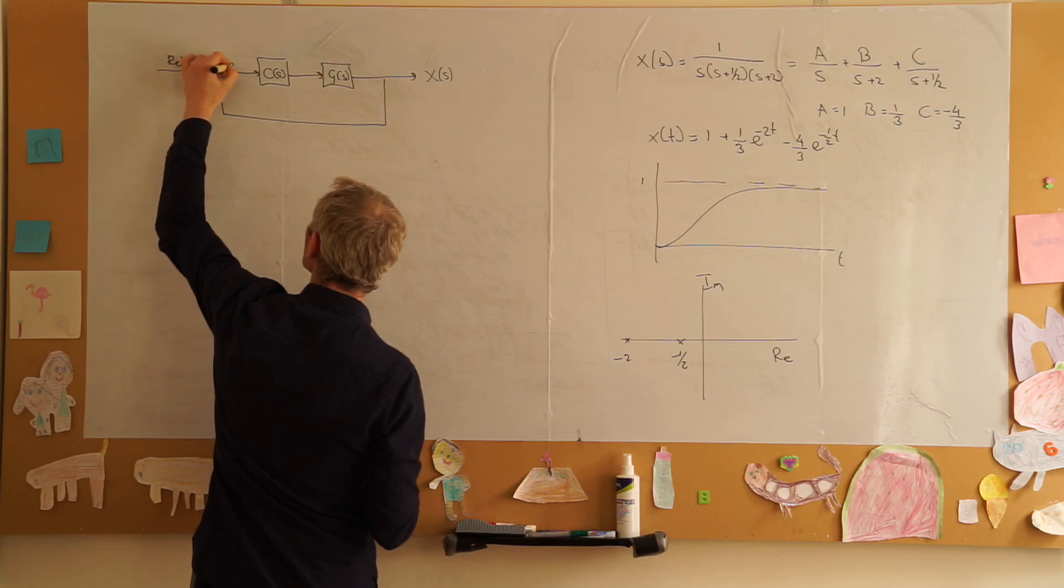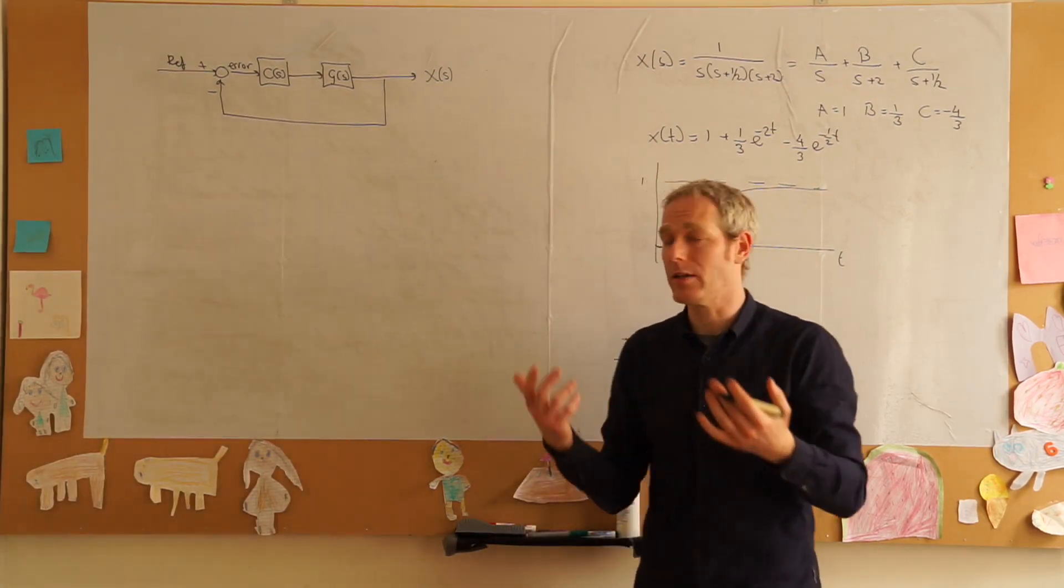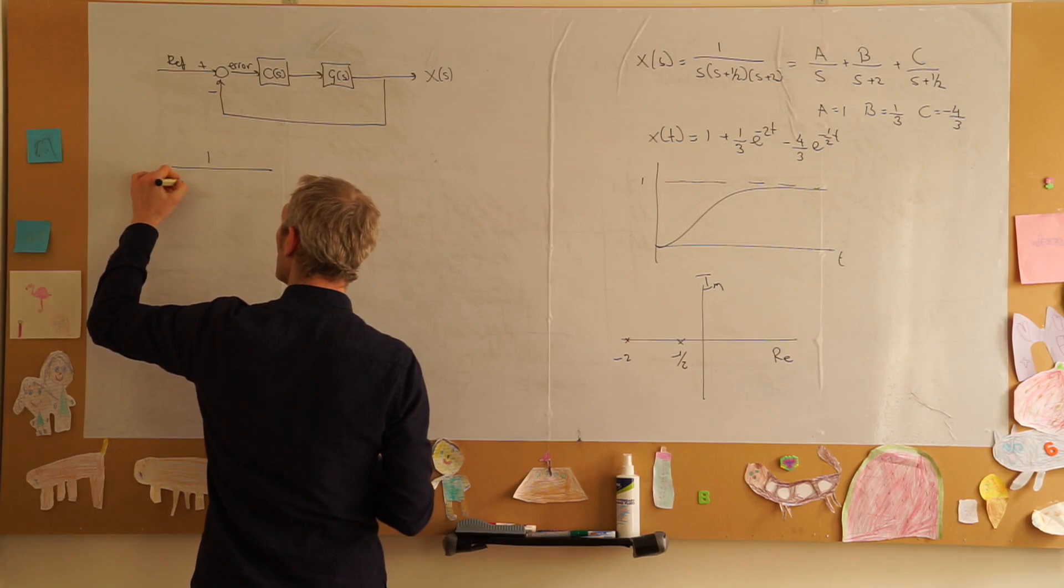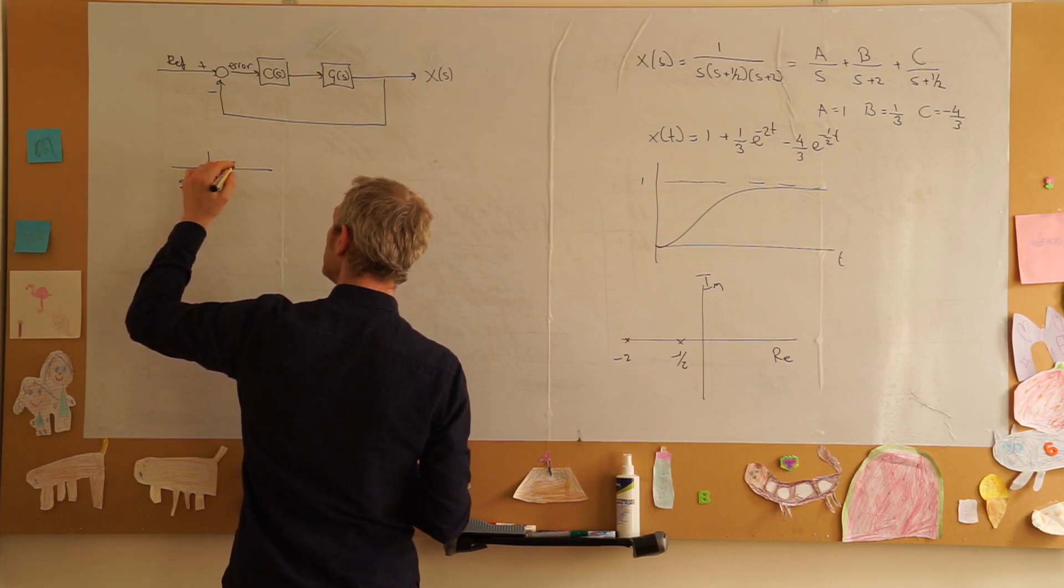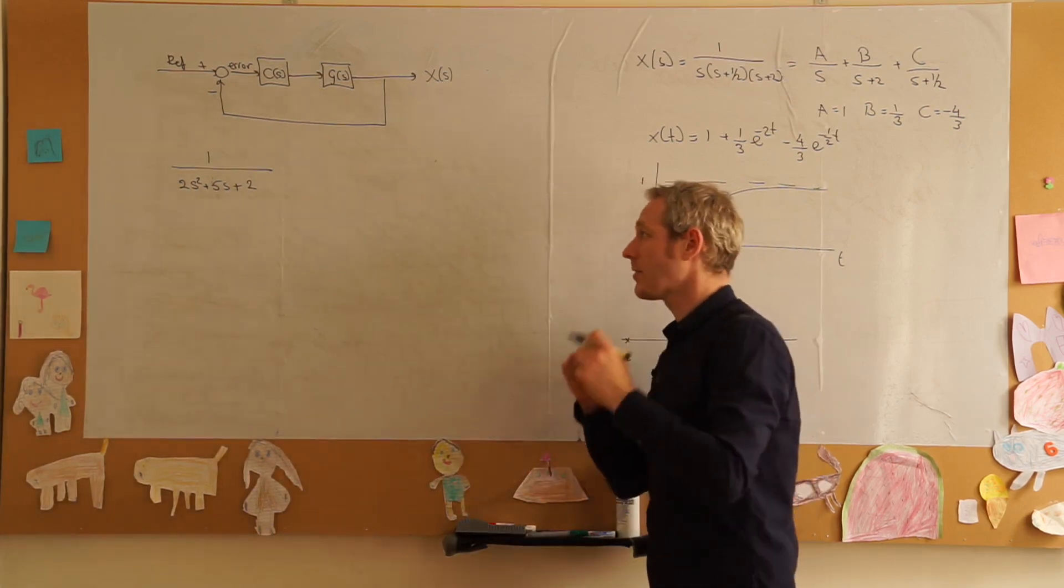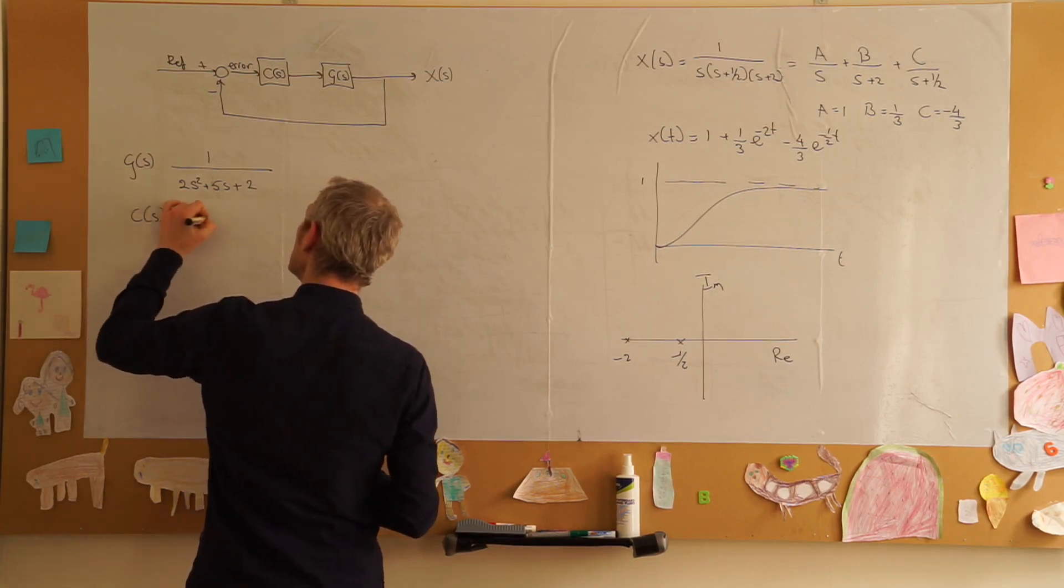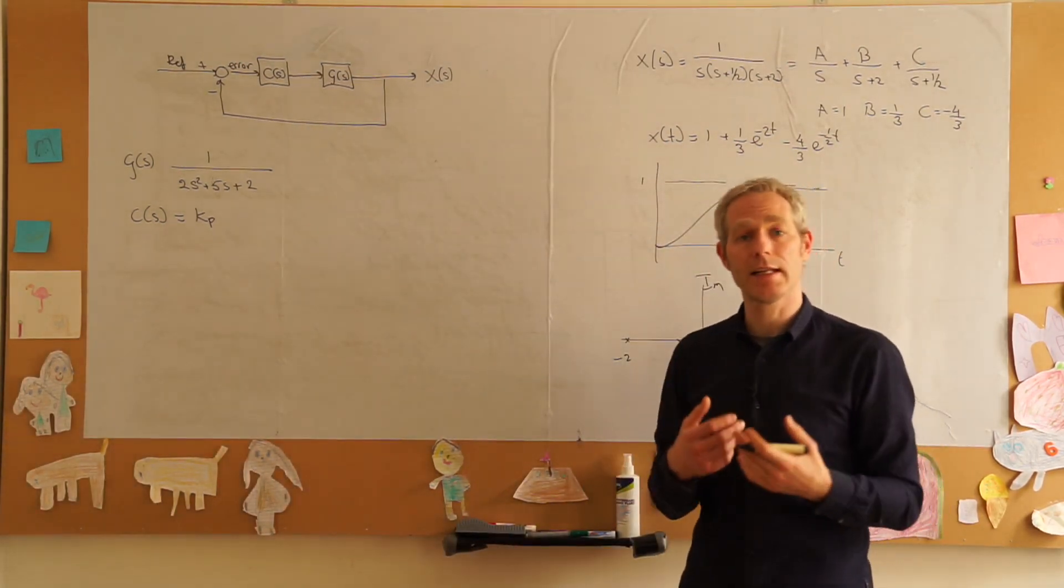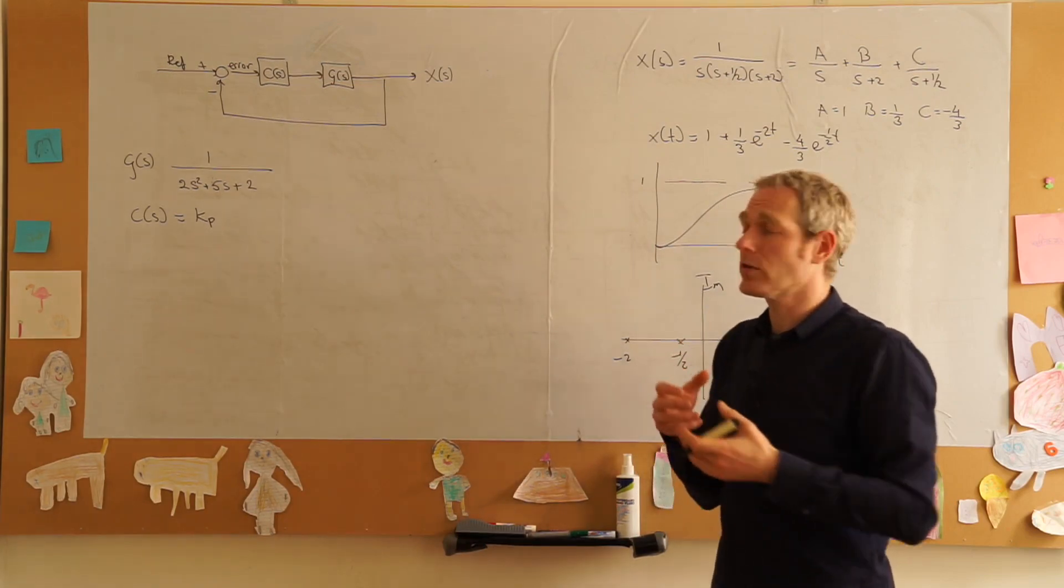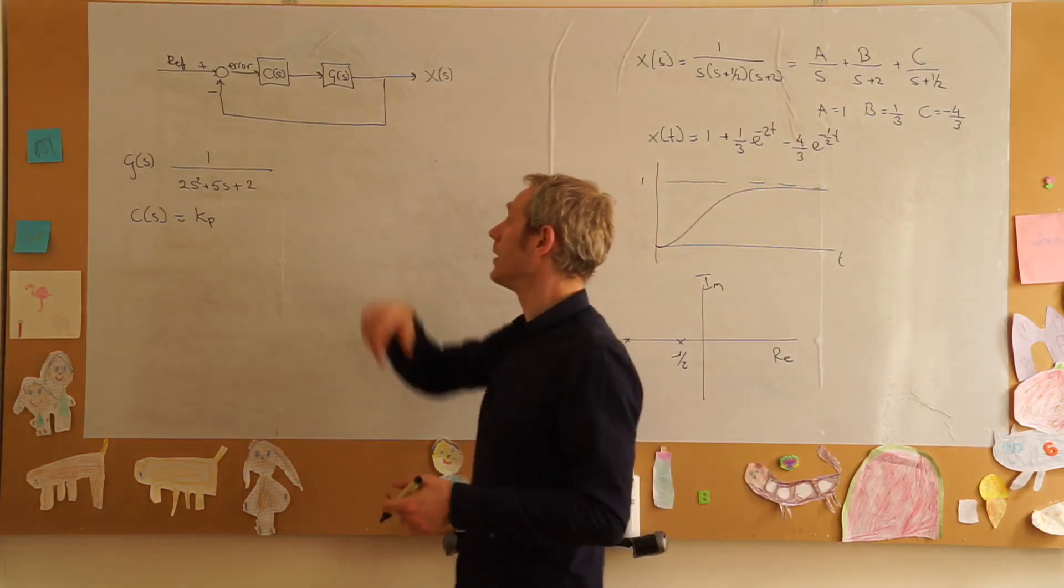We have an error signal. In our case we have g of s which is one over two s squared plus five s plus two. This is our system. Our controller c of s is simply some k p, some gain. Basically if we have a certain error, the proportional controller multiplies that error by a constant to get a bigger input into our system.